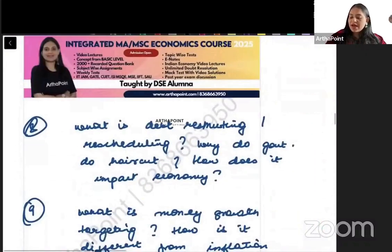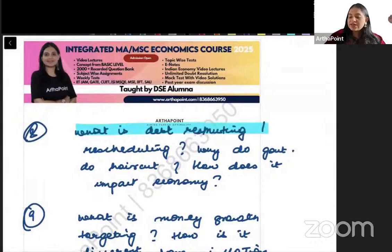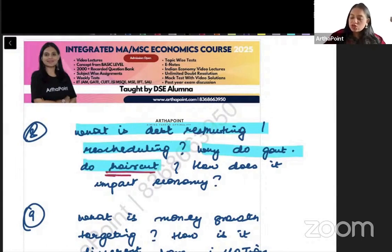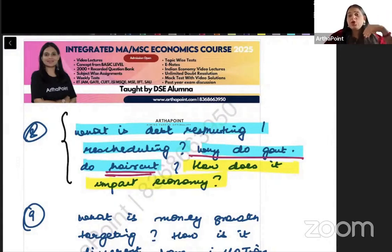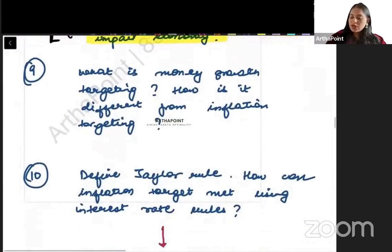Okay. Now the next question that can be asked in exam is this. What is debt structuring or rescheduling? Why do governments do hair cut? Yeh important term hai. It can be used in your exam. So why do governments do hair cut and how does it impact the economy? Toh is case mein you need to explain what happens when government is not able to repay the debt. Agar government pura paisa nahi de pati hai. And then government will only go ahead and repay partly. Toh woh ana jo pura aspect hai beta. You need to go ahead and explain this here. Okay.